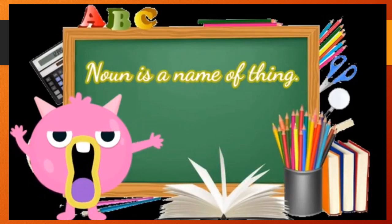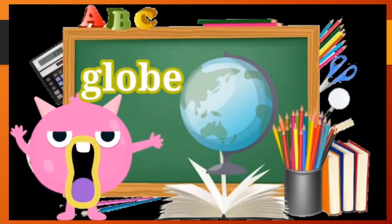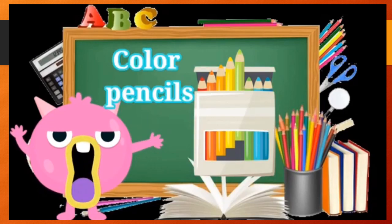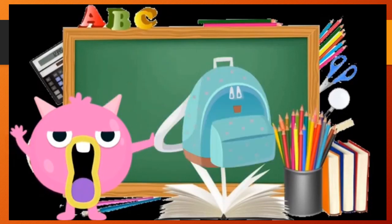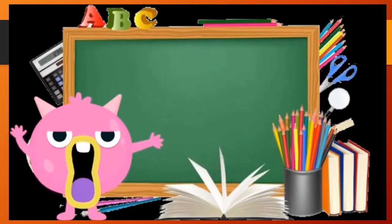Noun is a name of thing. Let us know some name of the things. This is a globe. A globe is an example of a noun. Pencil. Color pencils. These are color pencils. They are nouns. Bed. We have a bed. A bed is also considered as a noun.